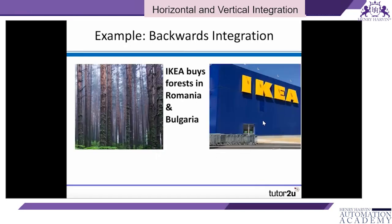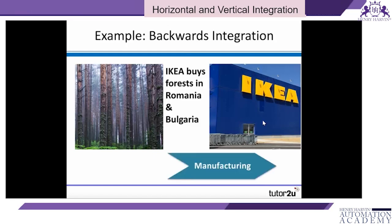Here's an example of backward integration. IKEA, one of the world's largest global retailers of furniture and household goods, in 2016 made a significant purchase of forests and associated equipment — wood cutters and collectors — in Romania and Bulgaria. It was ensuring its manufacturing business had access to raw materials by moving back into the supply chain — an example of backward integration.